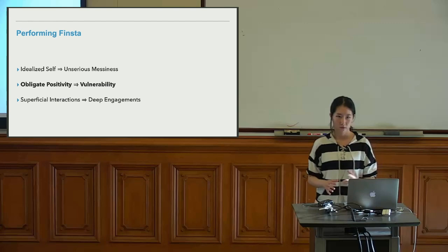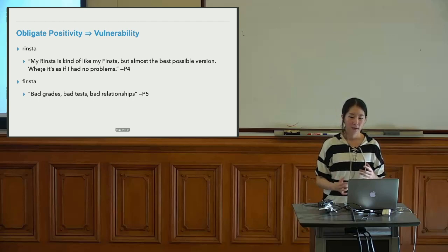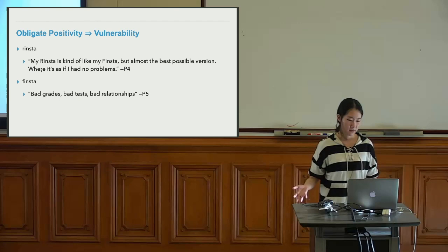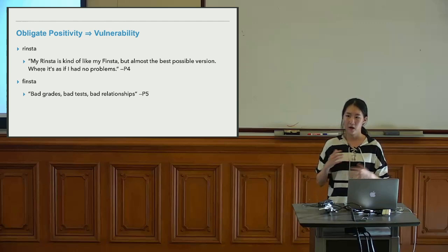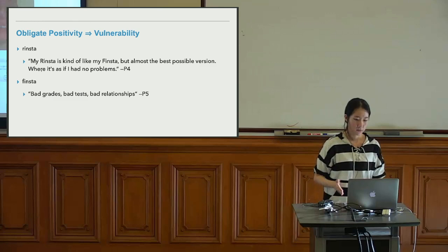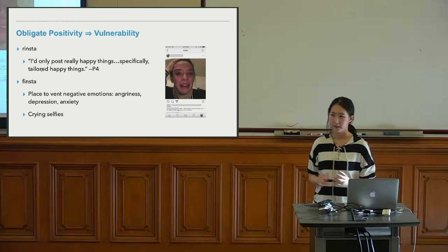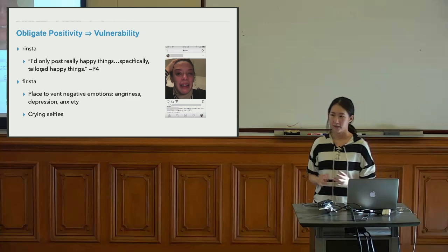Besides, we find that they have turned an obligated positive self-image into vulnerability. For them, Ringsta is a place to put really positive things — almost the best possible version of themselves with no problems. But Finsta becomes a place to post all the negative things, for example bad grades, bad tests, or bad relationships. This extends to emotions: Ringsta is for positive and happy things, while Finsta becomes a place to vent negative emotions such as anger, depression, and anxiety.